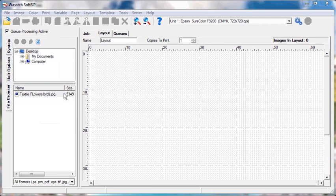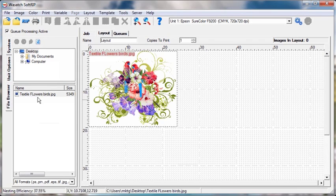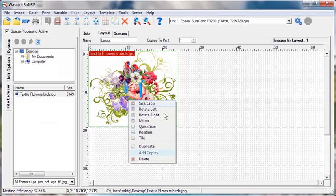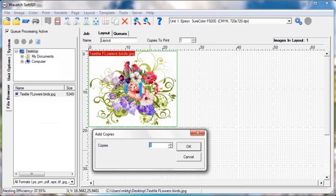Open your image in Wasatch. Wasatch allows you to lay out multiple images at once, and using the smart nesting tool you can create a layout that fits your needs best.